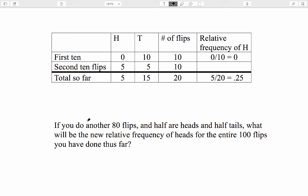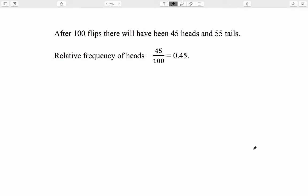If you do another 80 flips, and, by our assumption, half of them are heads and half are tails, we can ask, what will be the new relative frequency of heads for the entire 100 flips you have done thus far? To make sure you understand what we're doing here, please pause the video and try to answer this question before you go on. If the first 10 flips are all tails, but all subsequent flips are half heads and half tails, then after 100 flips, there will have been 45 heads and 55 tails. That's because there are 45 heads and 45 tails on the last 90 flips. That is our assumption. The first 10 flips are tails, all the rest are equally divided between heads and tails. If that's what happens, the relative frequency of heads, which was 0 after 10 flips and 0.25 after 20 flips, has now jumped to 0.45.